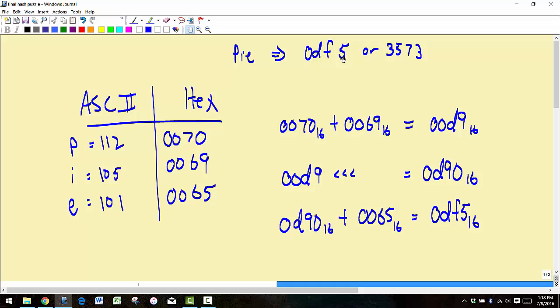So basically what we did is we looked at the ASCII two characters P, I, and E. These are base 10 and then the hexadecimal base 16 values for the letters as well. We just simply added these two together, so we added these two together here and we got 00d9. Then we did a left rotation so we just moved this over by one.